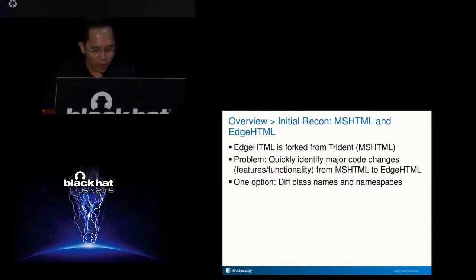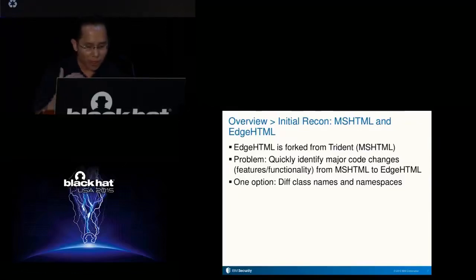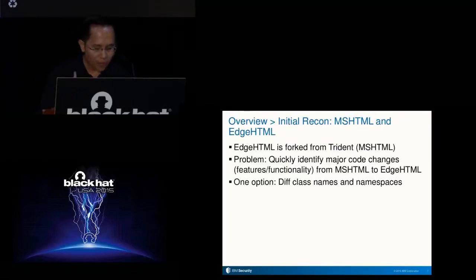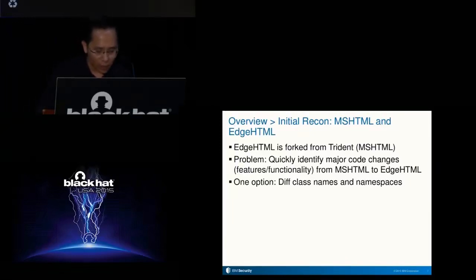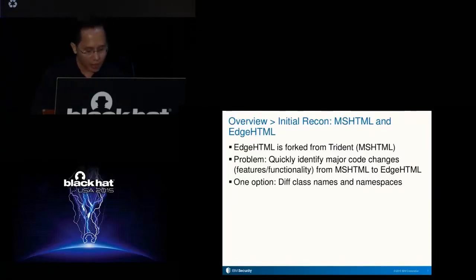Earlier I noted that I will also discuss the diffing method I used to identify major changes from MSHTML to EdgeHTML. This diffing method allowed me to spot potential changes in the attack surface, which I would eventually confirm by looking at the code. It is actually pretty simple — you just need a Python script and a text diffing tool. It can be made more complicated, but for the sake of discussion, the simplest way is described here.